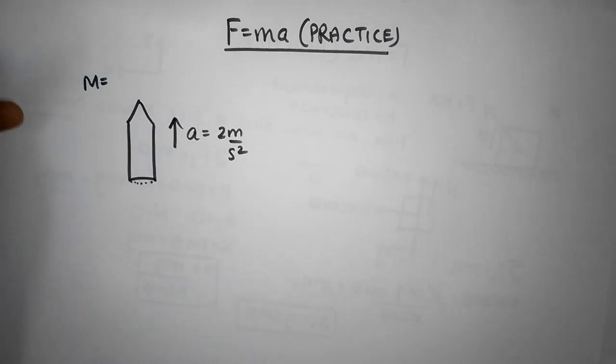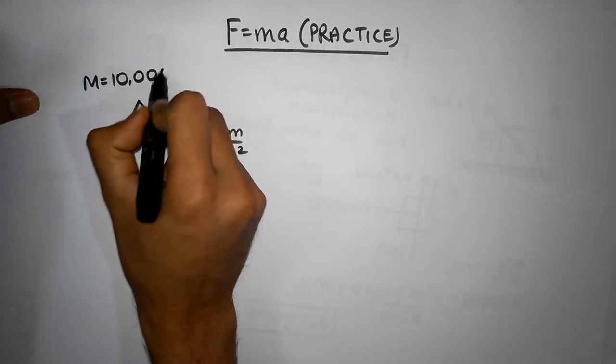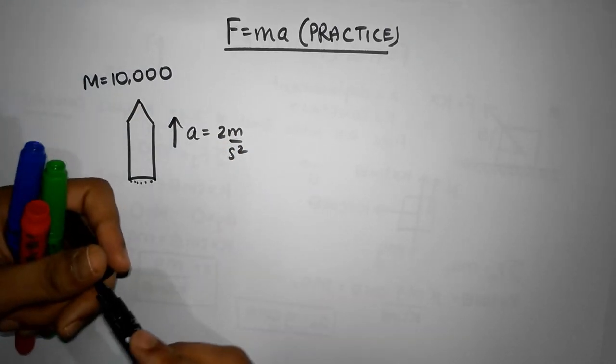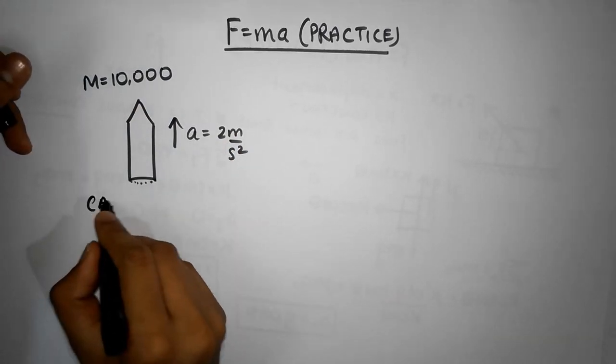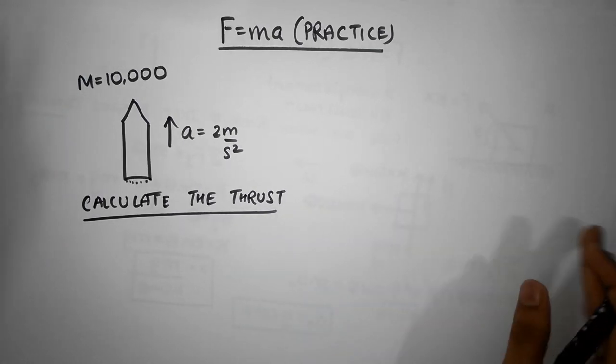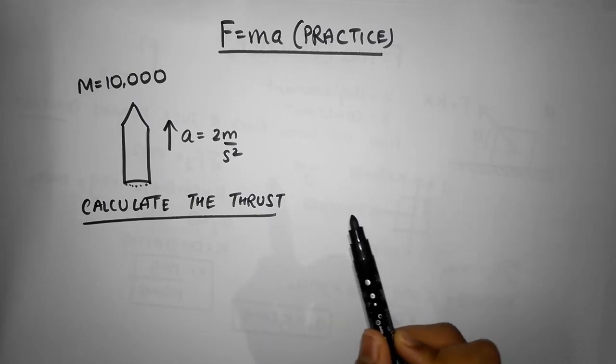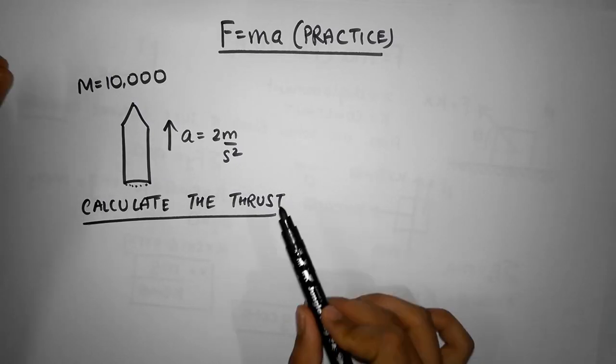Calculate the thrust force. Now what can you go wrong in this, or where can you go wrong in this? Well, the thing is what is not mentioned or what is a little bit subtle over here is that there is gravity. It's on Earth.